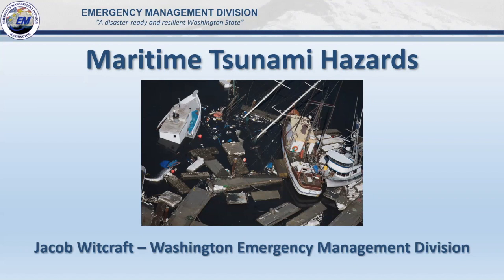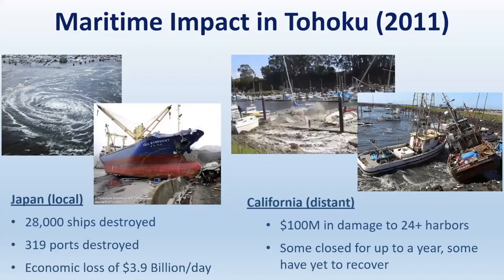Hello, I'm Jacob Whitcraft. I am the tsunami program coordinator for the Washington Emergency Management Division with a focus on the intercoast and maritime. I'm going to talk about the maritime hazards of tsunamis, starting with maritime impacts from the 2011 Tohoku tsunami. In Japan, that was a local event, and for their maritime industry they lost 28,000 ships, 319 ports were destroyed, and it cost their economy about $3.9 billion a day. In California, the same event impacted their coasts as a distant event, causing over $100 million in damage to over 24 harbors, with some harbors closed for over a year.